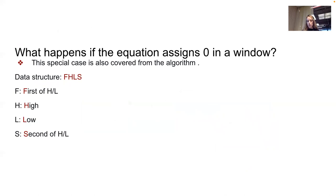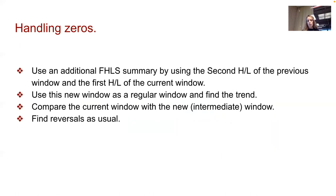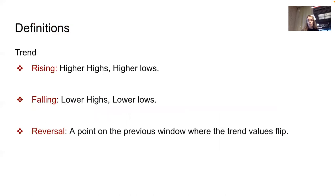Here is an example of the summary of windows, where rising windows are illustrated in green and falling windows in red. One might notice that the value of zero might result from the trend calculus equation — the way around this is by introducing a data structure where we find the first high and low, the high, the low, and the second high and low. We use an additional summary with the second high or low of the previous window and the first high or low of the current window, then find reversals as usual.